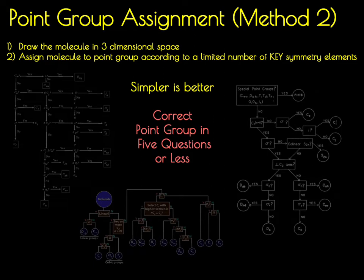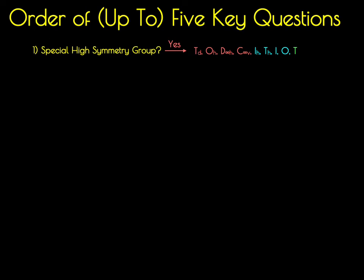We're going to go through and ask ourselves five specific questions that will lead us to the correct point group of a molecule depending on the answer to each previous question. The first question is: is your molecule in a high-symmetry special point group — is it a linear molecule, or is it contained in a cubic point group? These high-symmetry molecules can be identified just by looking at them, and once identified, you're done. Let's tackle lower-symmetry molecules by going through these questions.